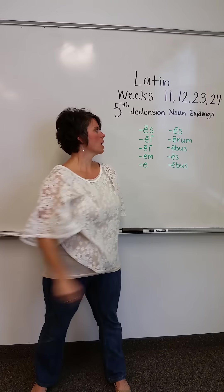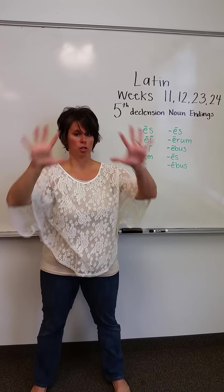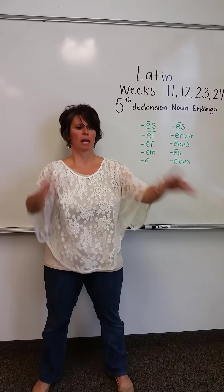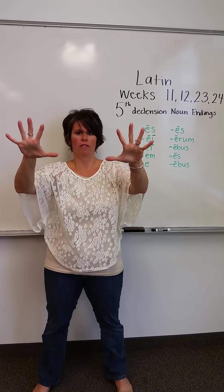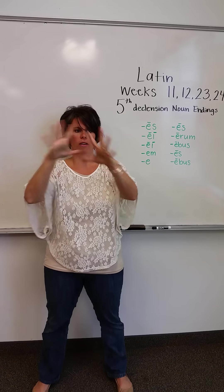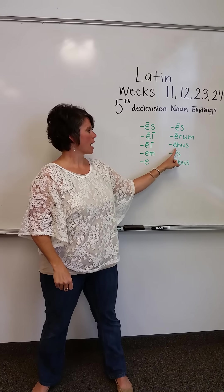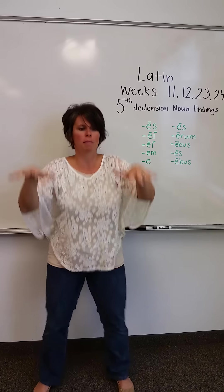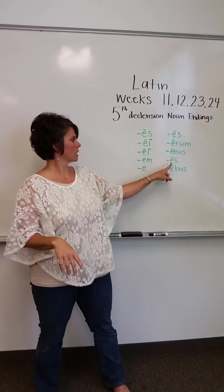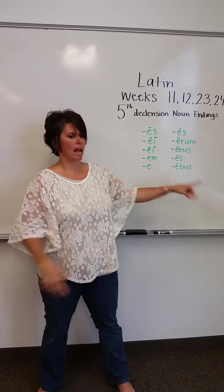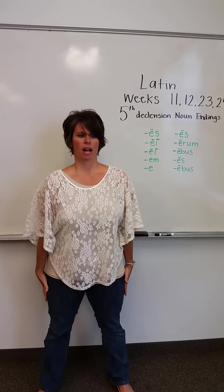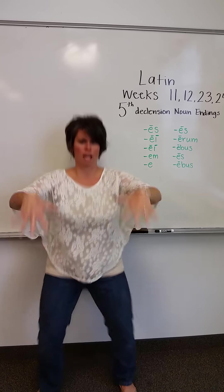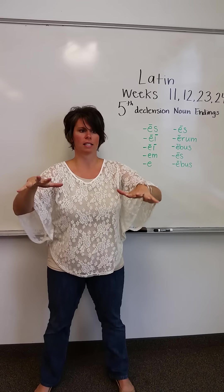For plural, we're going to use two five hands, and we have 'aces'. 'Arum' — like we're blowing air, using all fingers. 'Abus' — we're going to have all five fingers, like we're riding on the back of a bouncy bus. 'Abus', 'aces' again making letter 'a', and 'abus' again — we're bouncing on the bus.